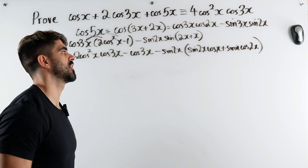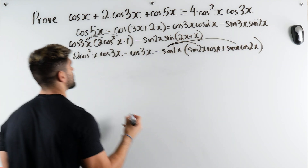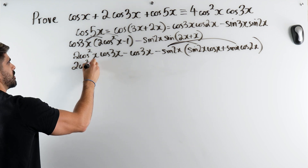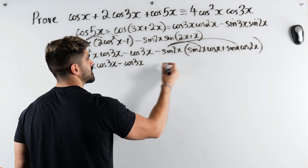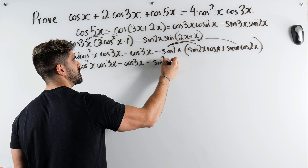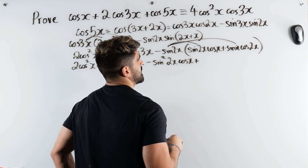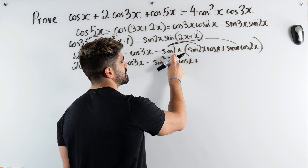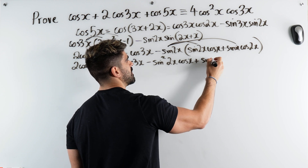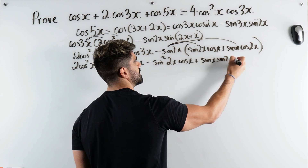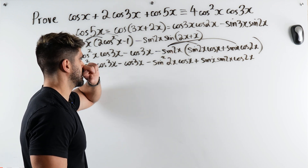Let's start expanding the brackets. We have 2cos²x·cos3x minus cos3x, then minus sin2x times the expansion of sin(2x + x). Note that the sign here is minus, so be careful with signs.